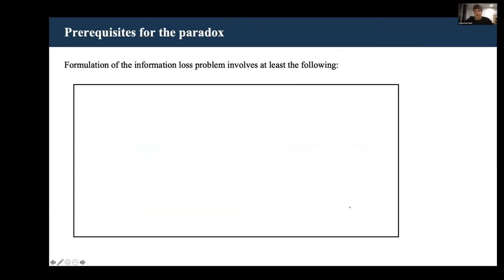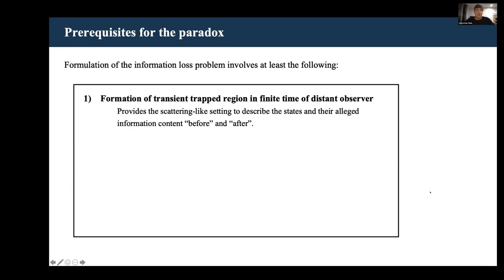Let's backpedal a little bit and think about what are actually the ingredients that we need to set up the information loss paradox. Well, first of all, we need a transient trap region.